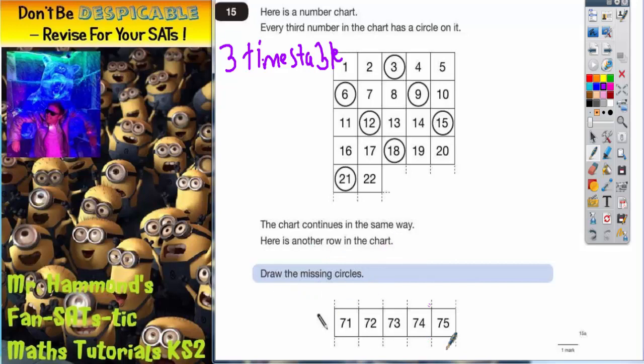So we've got to know if these numbers are in the 3 times table. Now one test for the 3 times table, or divisibility test for the 3 times table, is to add up the digits in any number.